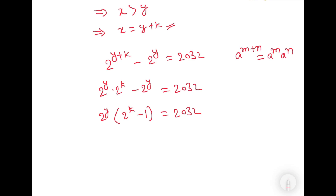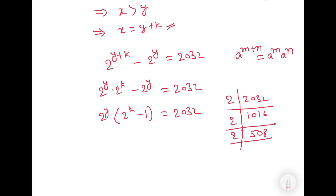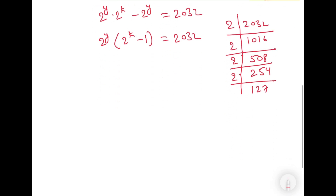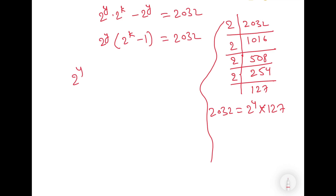Now let us find the factors of 2032. If we divide 2032 by 2, we get 1016. Dividing again by 2 gives 508, and again by 2 gives 254. Dividing once more by 2 gives 127. So 2032 can be written as 2 to the power 4 multiplied by 127. Therefore, we can write the equation as 2 to the power y into 2 to the power k minus 1 is equal to 2 to the power 4 into 127.